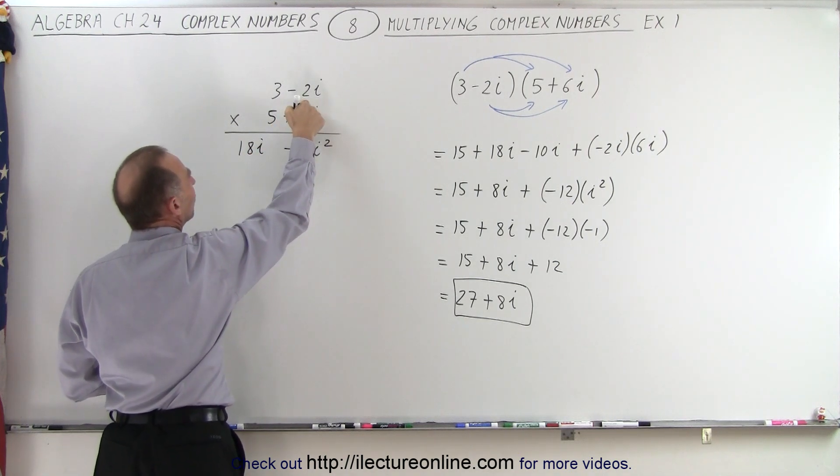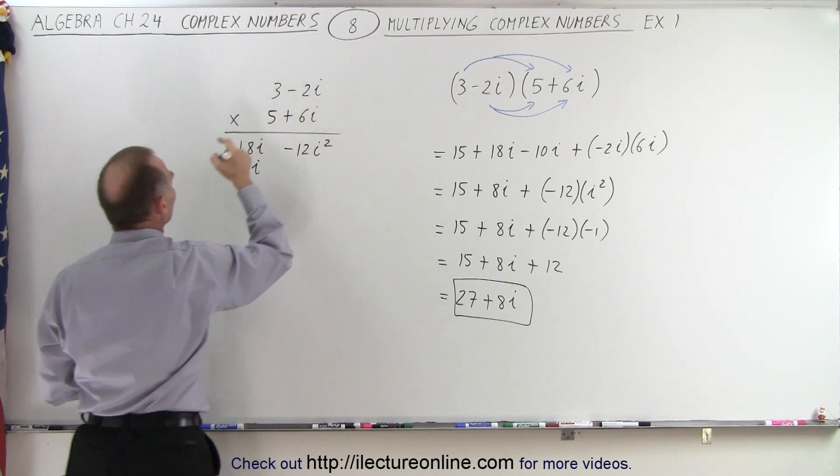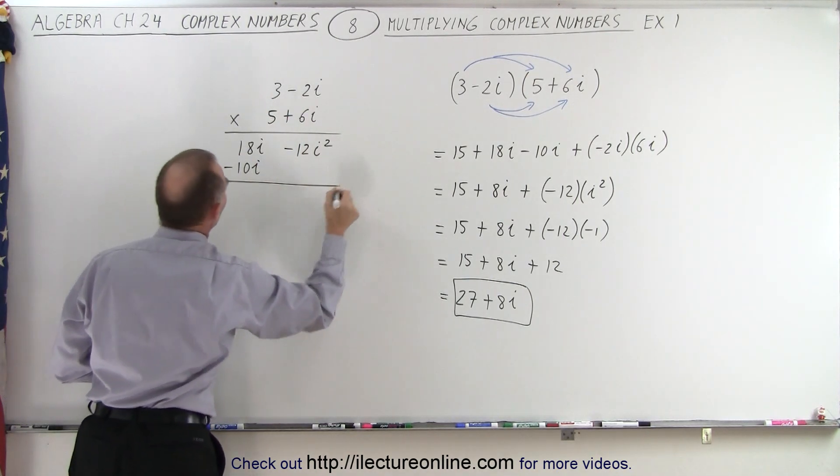5 times a negative 2i gives us a negative 10i. And 5 times 3 gives us a plus 15. Now we add all those together.